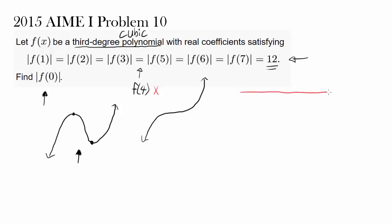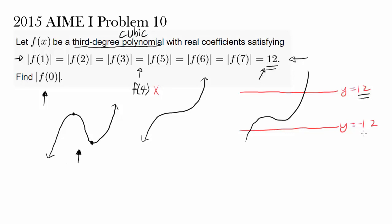Think of a line going through y equals 12 and another line going through y equals negative 12. What this equation is telling you is that if you graph the cubic polynomial, six of those points are going to evaluate to either 12 or negative 12, so the absolute value is 12. This means the cubic has to intersect y equals 12 or y equals negative 12 six times in total. Obviously just intersecting it twice or four times won't work.